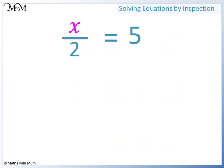Here is x over 2 equals 5. This means x divided by 2 equals 5. We are looking for the number that when divided by 2 gives us 5. 10 divided by 2 equals 5. So x equals 10.